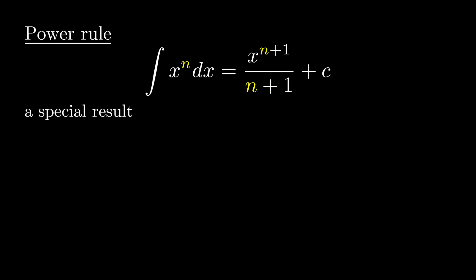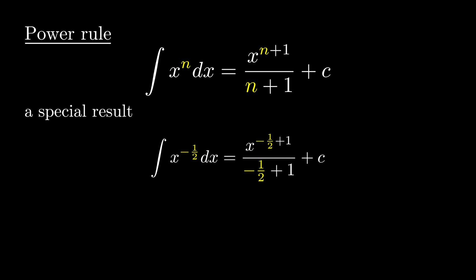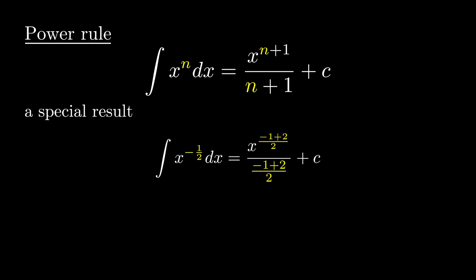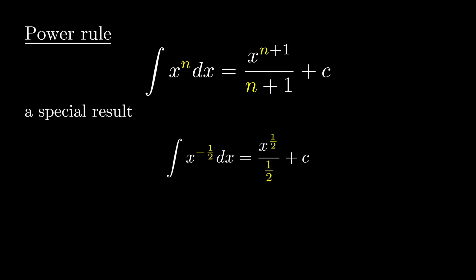Special result: integration of x^(-1/2) dx. Here n is replaced with -1/2, so we get x^(-1/2 + 1) over (-1/2 + 1) plus c, which gives x^(1/2) over (1/2) plus c. Rewriting: integration of 1/√x dx equals 2√x plus c.